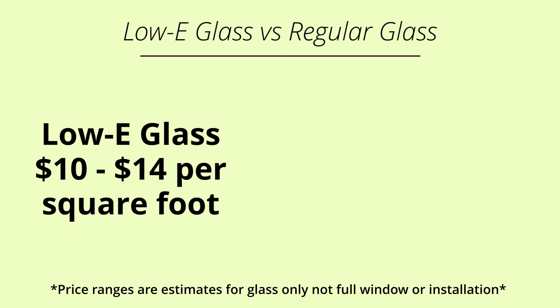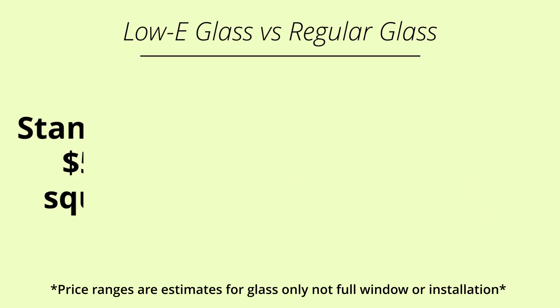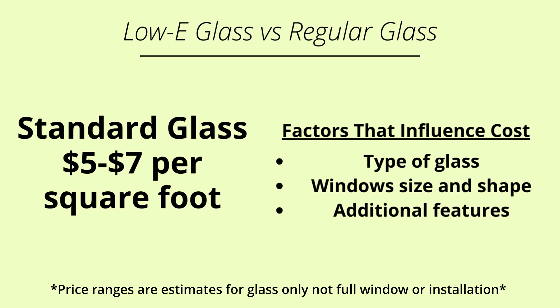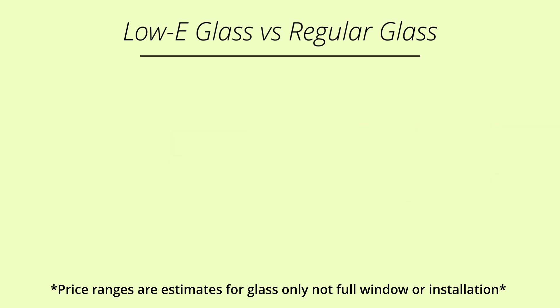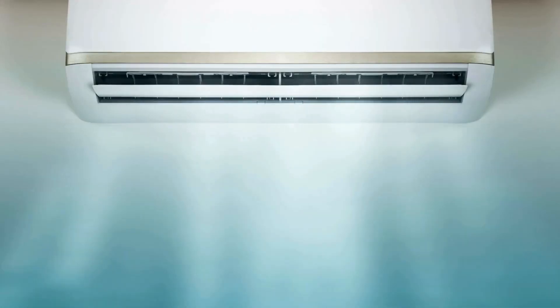This price range can vary depending on the specific type of low-e coating, the size and shape of the window, and any additional features you might choose. In comparison, standard glass typically costs between five and seven dollars per square foot. Low-e glass is generally more expensive up front; however, it's important to consider the long-term savings on your energy bills. Low-e glass can reduce your heating and cooling costs by up to thirty percent, which can add up significantly over the years.